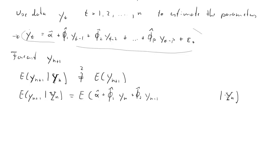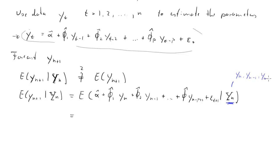This is conditional on the information set at time N — so Y_N, Y_{N-1}, Y_{N-2} and all past observations. We're taking expectations of random variables, so we need to figure out which values here are actually random variables given the information available at time N.